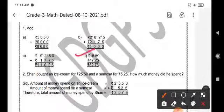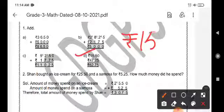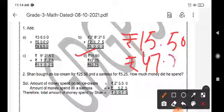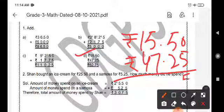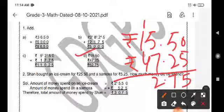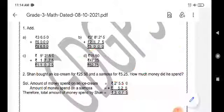Now, D part similarly. We will do 15.50 and 47.25. So, add zero plus five is five. Five plus two is seven. Seven plus five is twelve. Four plus two is six. So, you are getting 62.75.